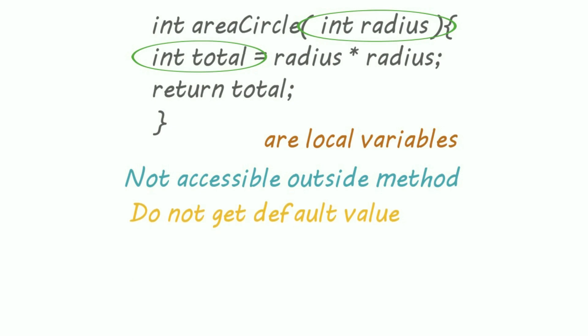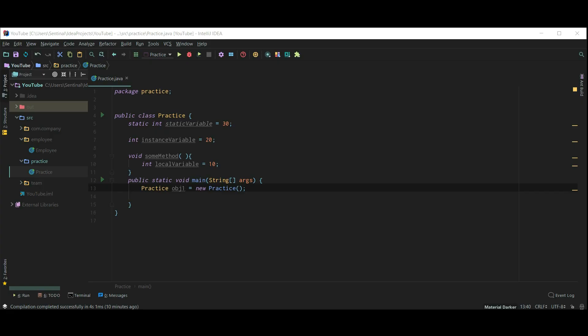I hope now you are clear with the concept of instance, static and local variables. Let's quickly summarize everything so you can remember this thing better. I have created three variables. One is static variable,